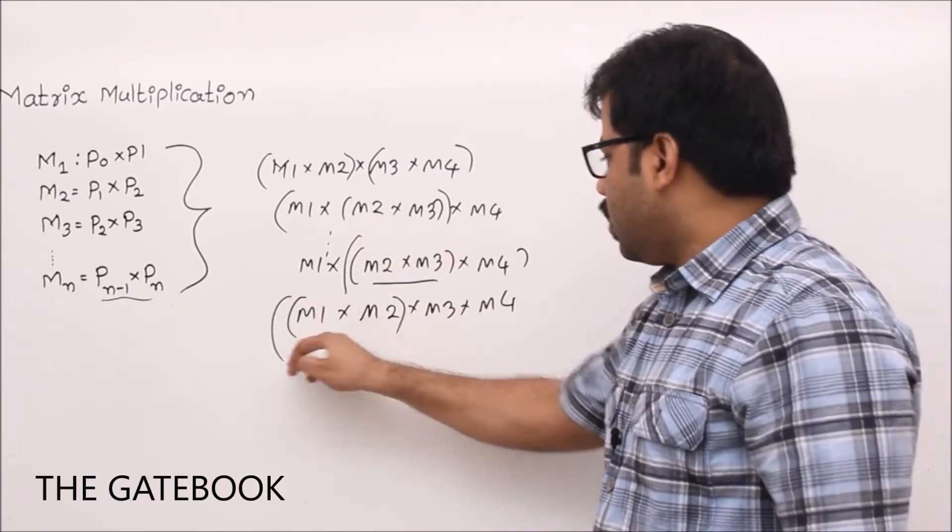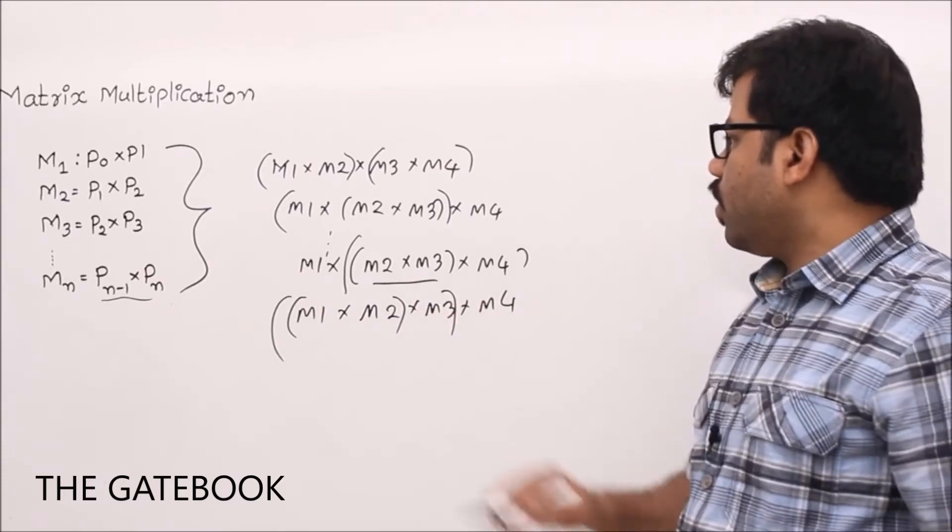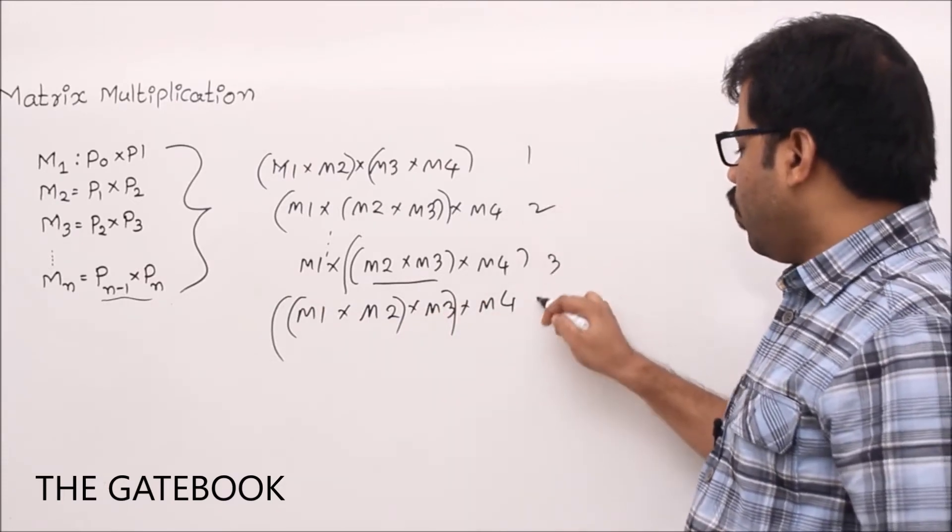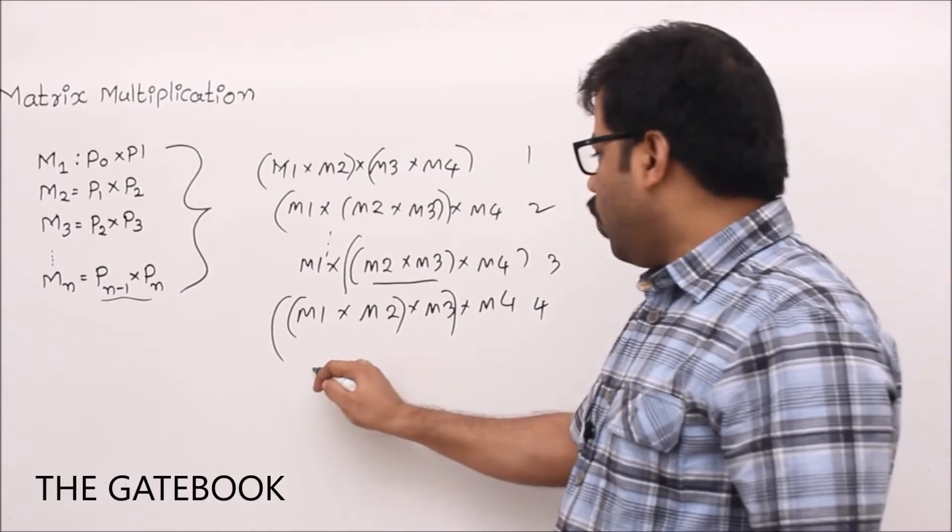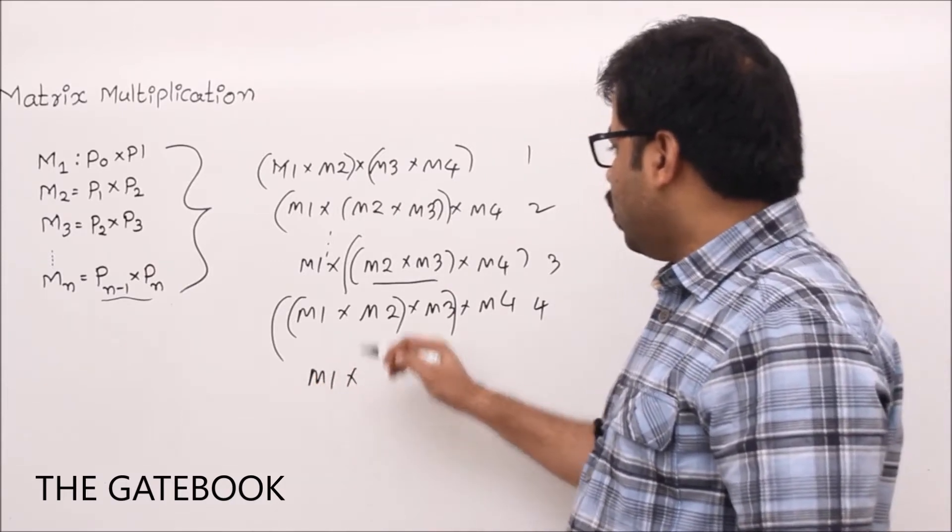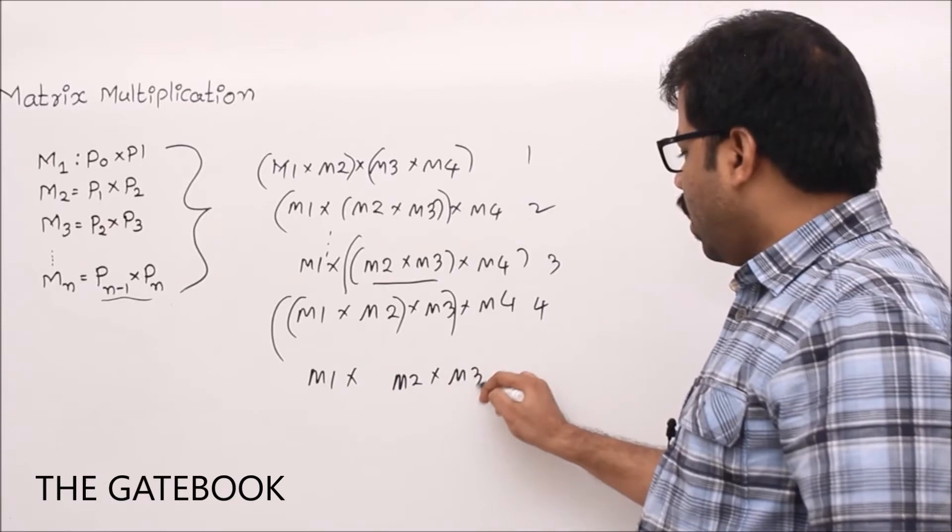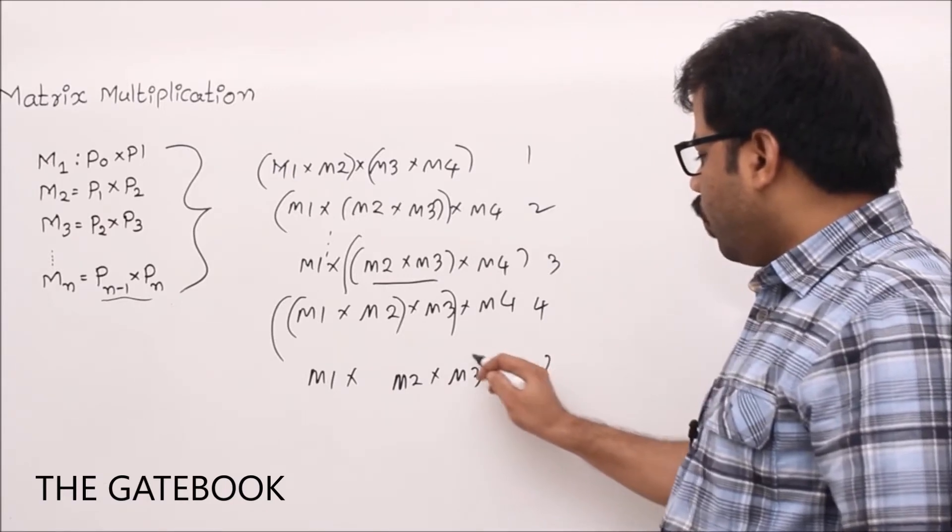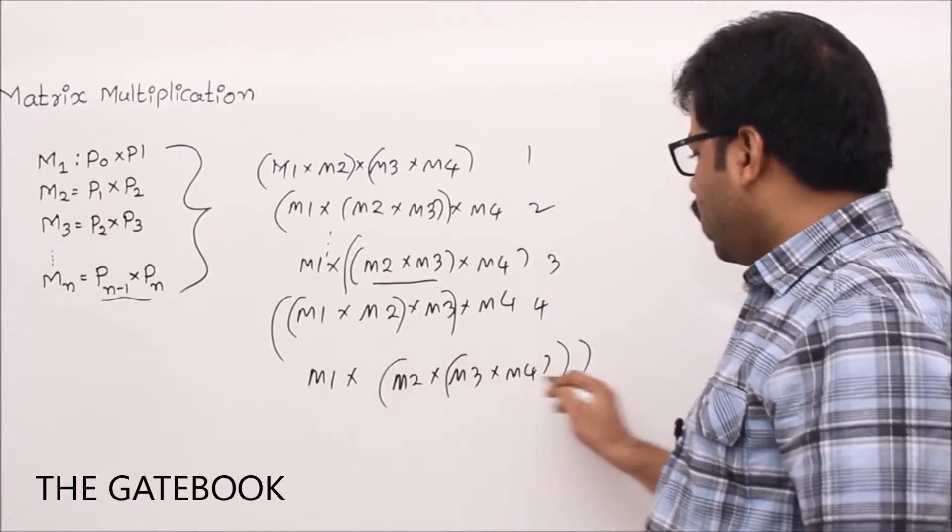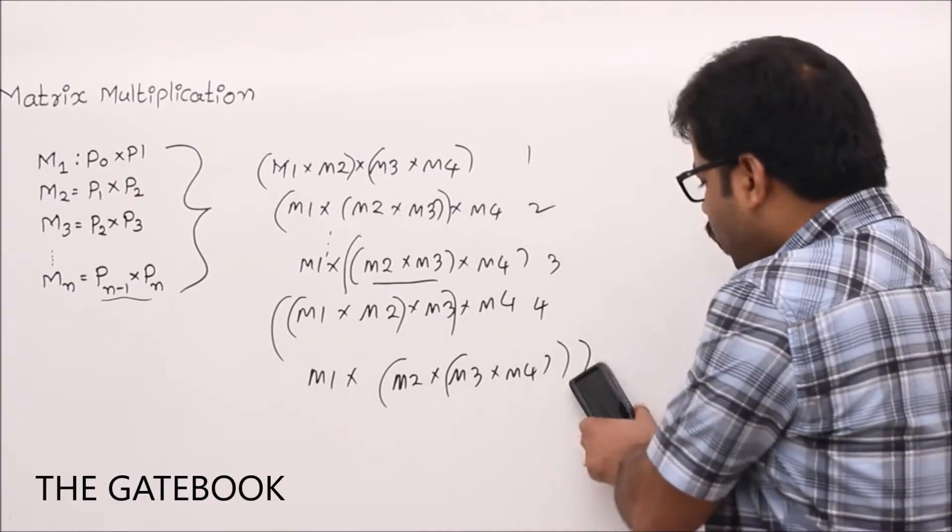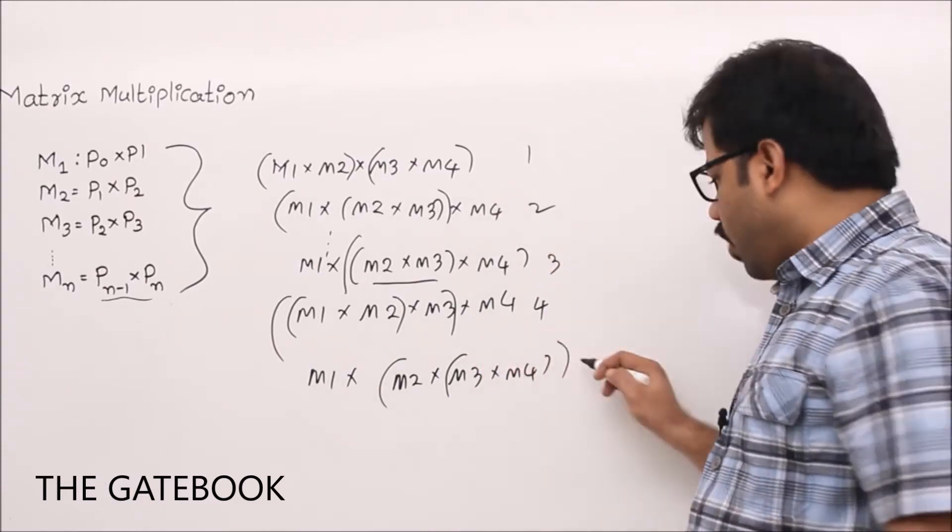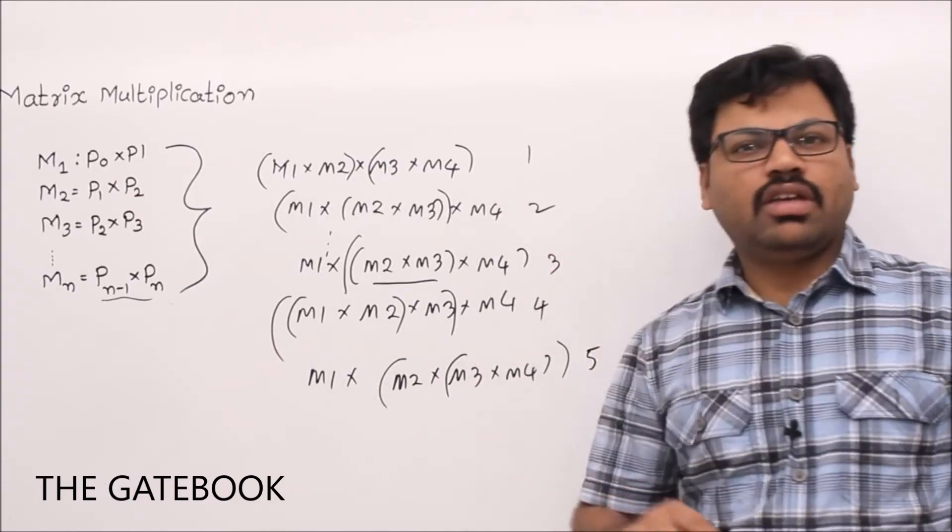Yes, one, two, three, four. Anything else? There is one more way - m1, maybe so write most m2, m3, m4. M3, m4 first, after that result, after that this result. So if you see these things, there are five ways we can multiply them actually.